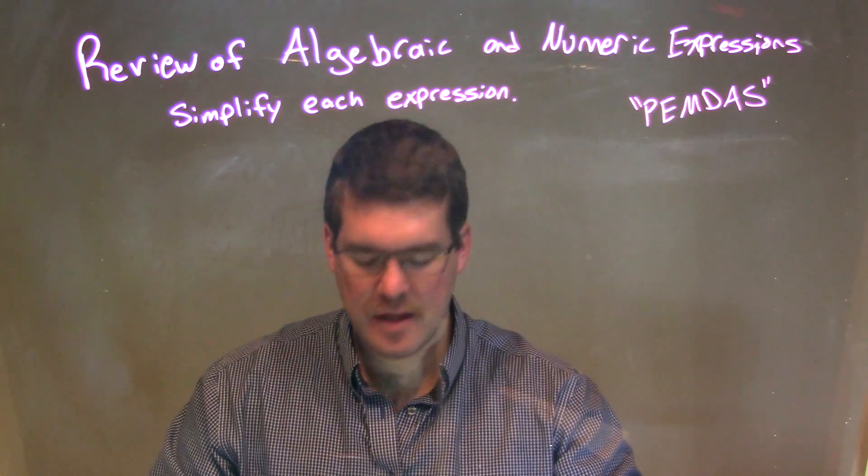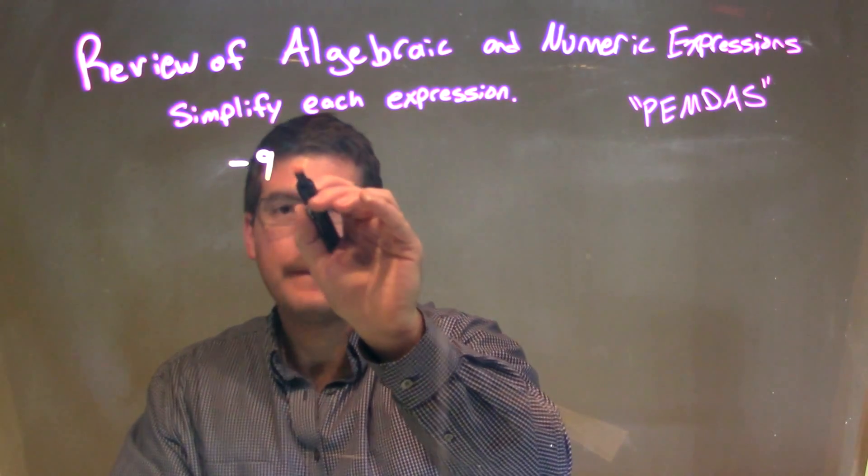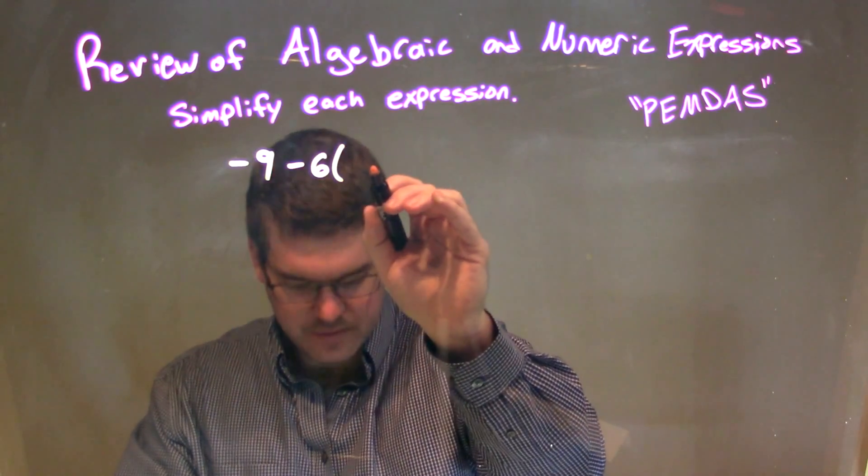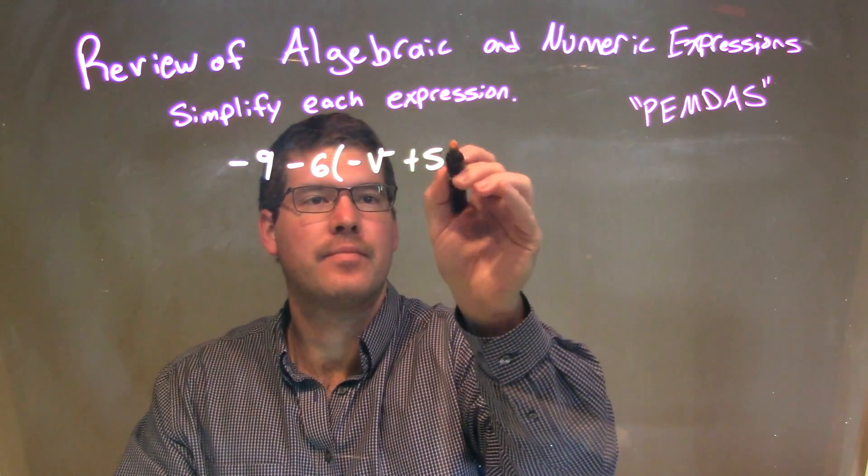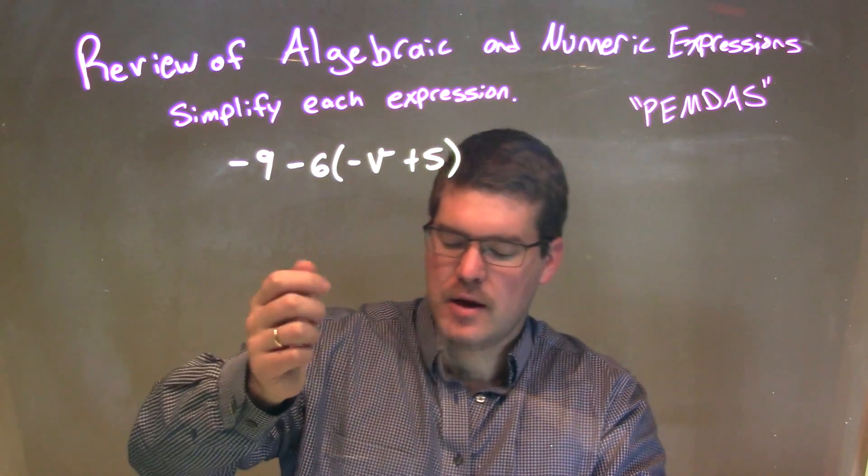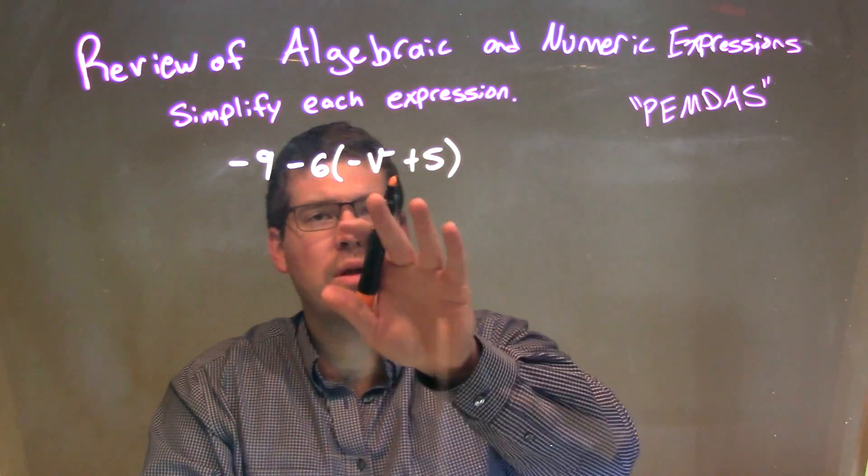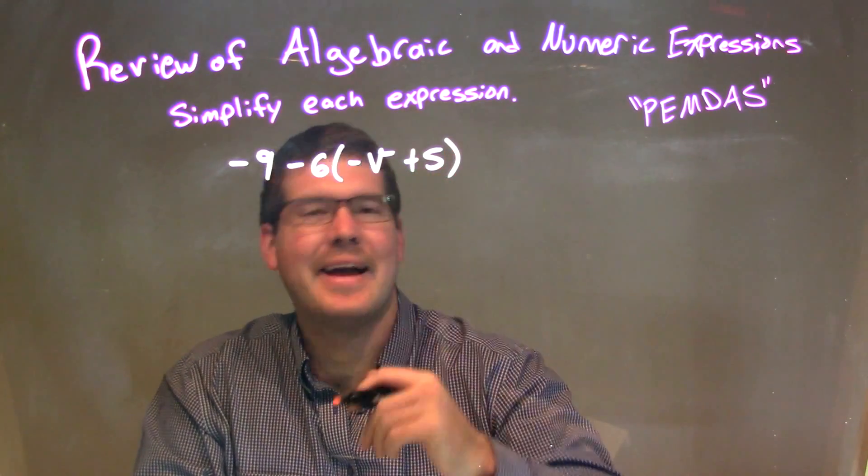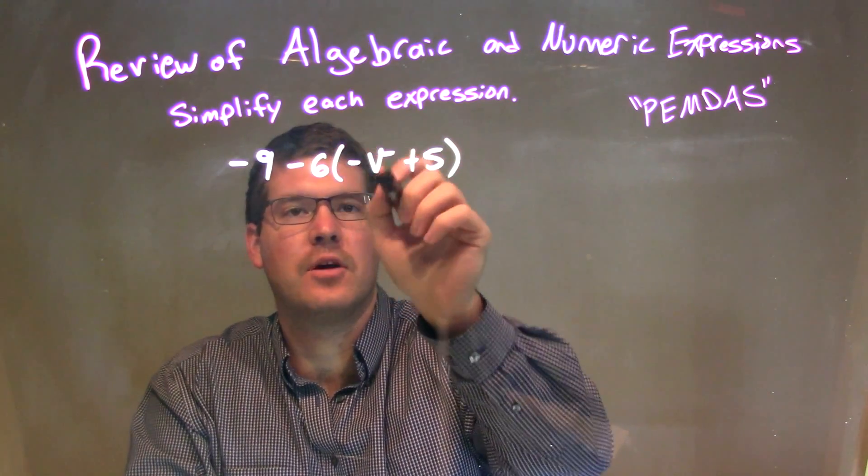So, if I was given this expression, negative 9 minus 6 times negative v plus 5, if I'm simplifying this, I see I have my negative 6 outside this parenthesis. Inside the parenthesis, negative v and 5, I cannot combine. So, I'm going to have to distribute that negative 6 multiplication across.